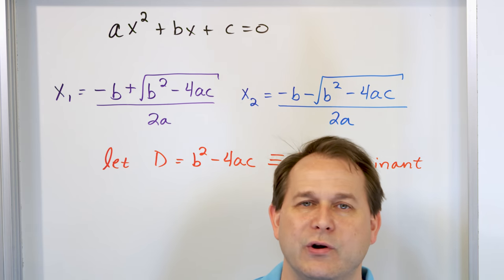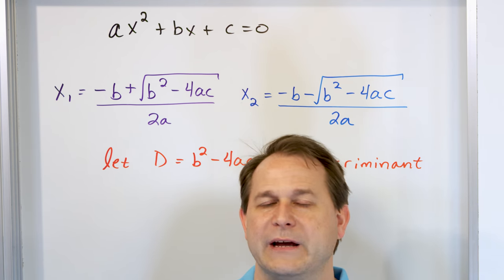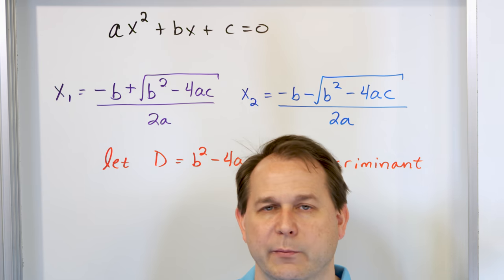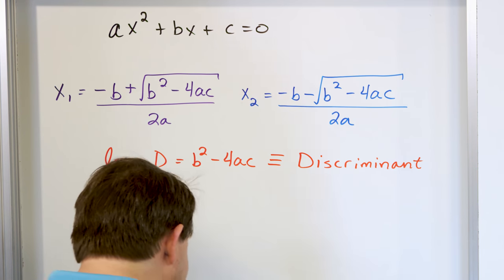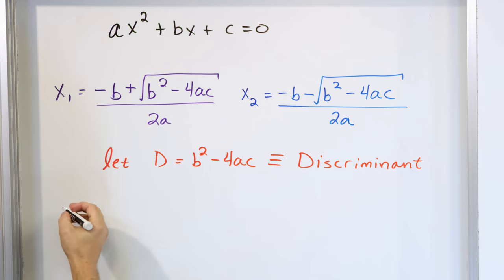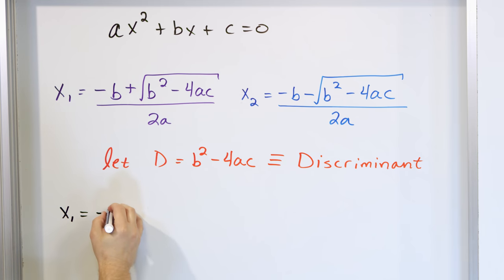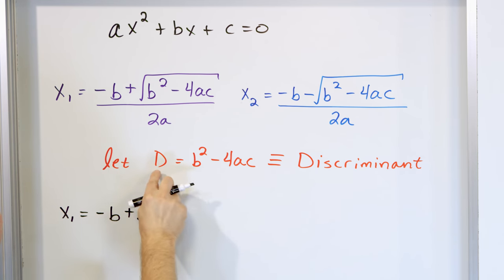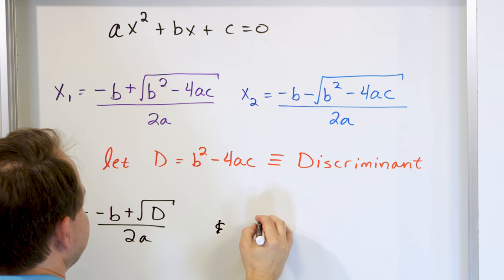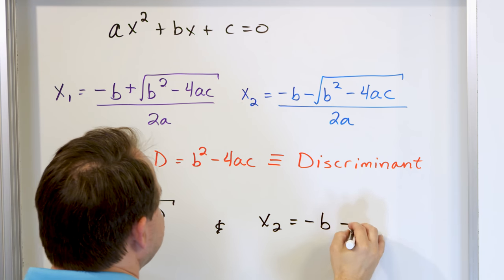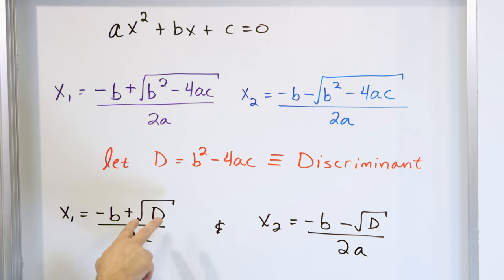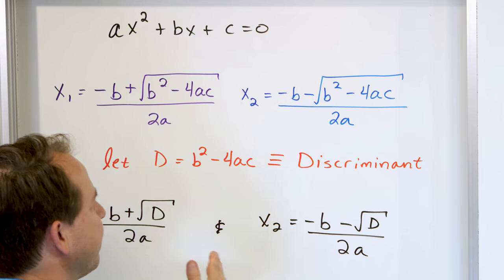Anytime you're in an exam or a test or reading a book that talks about the discriminant, in your mind you need to think that's just whatever is under the radical in the quadratic formula — that's what we call the discriminant. So we can rewrite the solutions in terms of the discriminant D: x₁ is negative B plus the square root of D over 2A, and x₂ is negative B minus the square root of D over 2A.